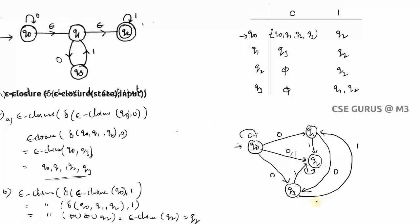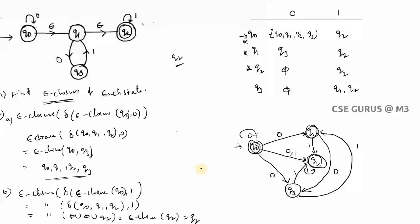This is the NFA without epsilon moves — the equivalent NFA for the given epsilon-NFA. Remember this is NFA, not DFA, so some transitions like Q3 on 0 and Q2 on 0 may not exist. This is the procedure to convert NFA with epsilon moves to NFA without epsilon moves. The key steps are: find e-closures of each state, then apply the formula for each transition. We will go to the next concept in the next video lecture. Thank you.